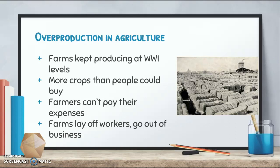Farms were going out of business because of this. There were more crops being planted than people could buy or would be willing to buy. Farmers had to sell all these bushels of wheat for practically nothing — a price so low that farmers weren't making enough money from their crops to pay their expenses, like their employees, repairs, plows, growing their business, or even their own living expenses like food.